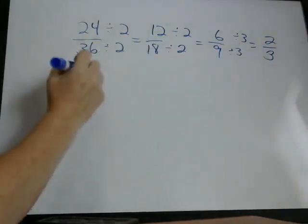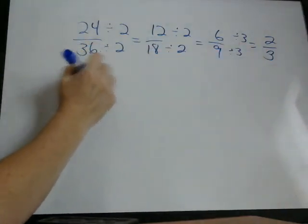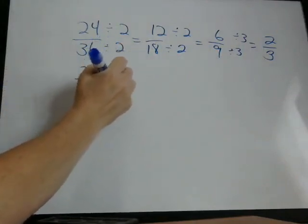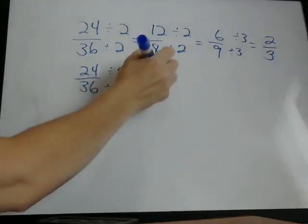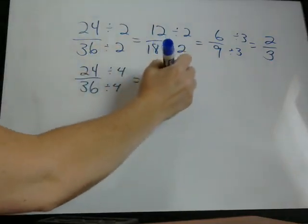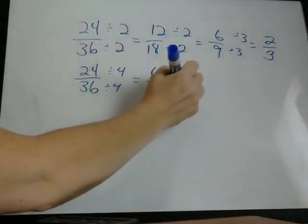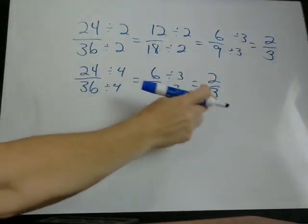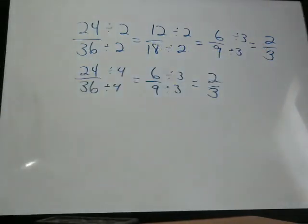Now, we divided by 2 and then by 3 a couple times, but there's alternate ways to do this. So we could have recognized that, oh, 24 and 36 can also be divided by 4. So if we started with 4, we would have got 6 9ths, and both of those can be divided by 3, and we end up with 2 thirds. So we took an alternate route, but we still got the same answer.